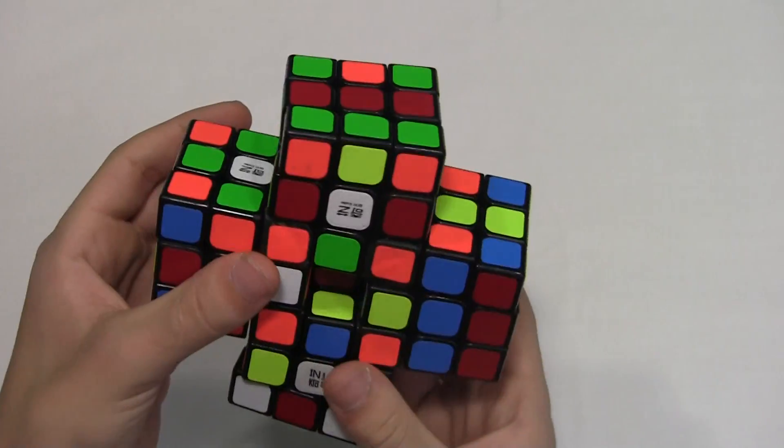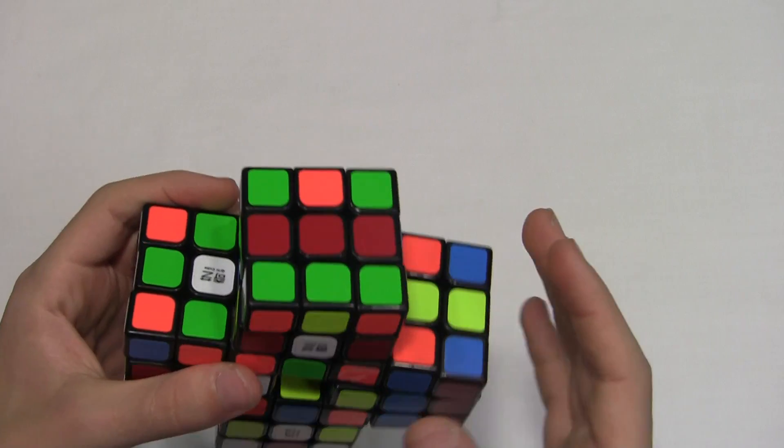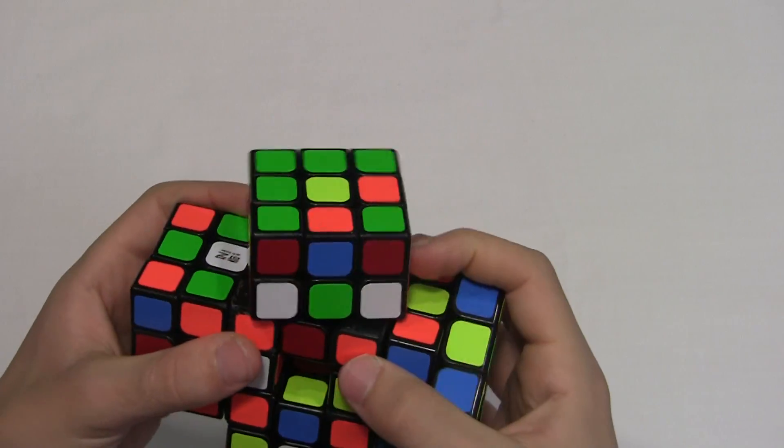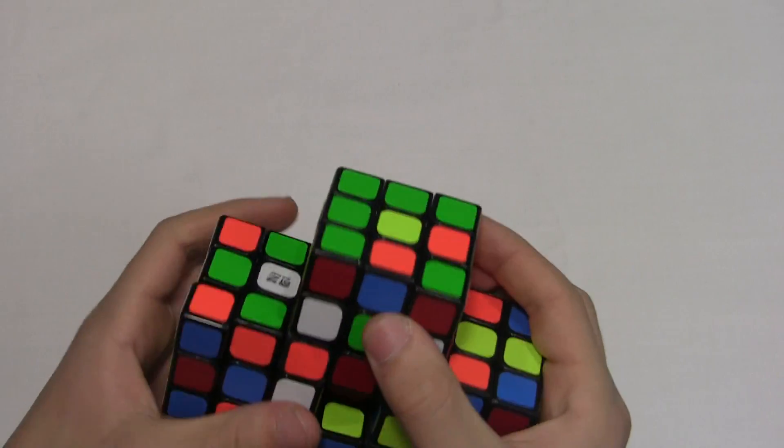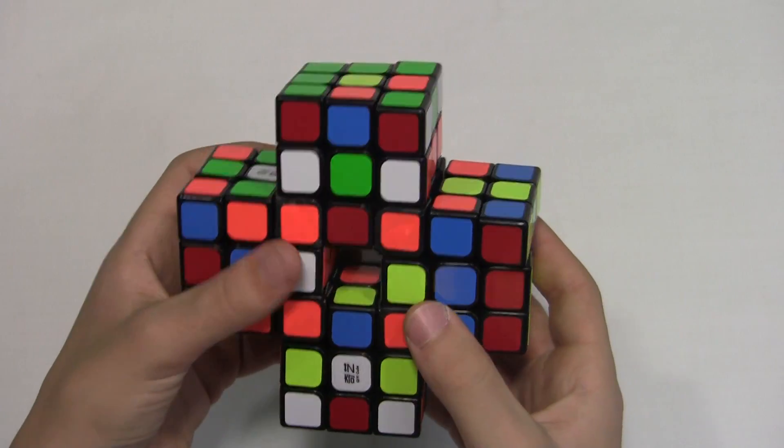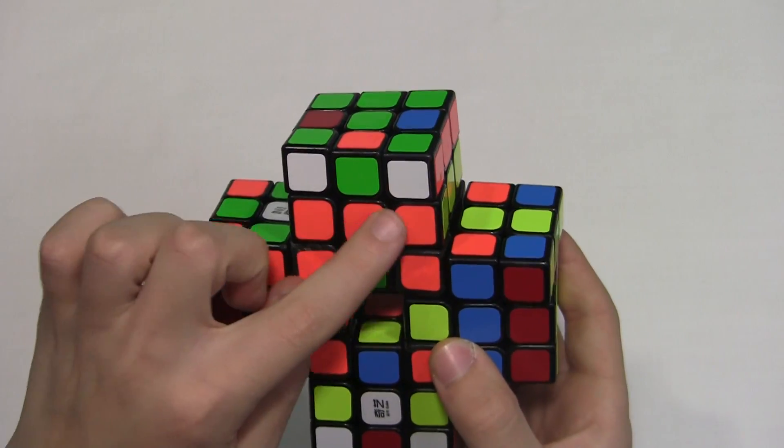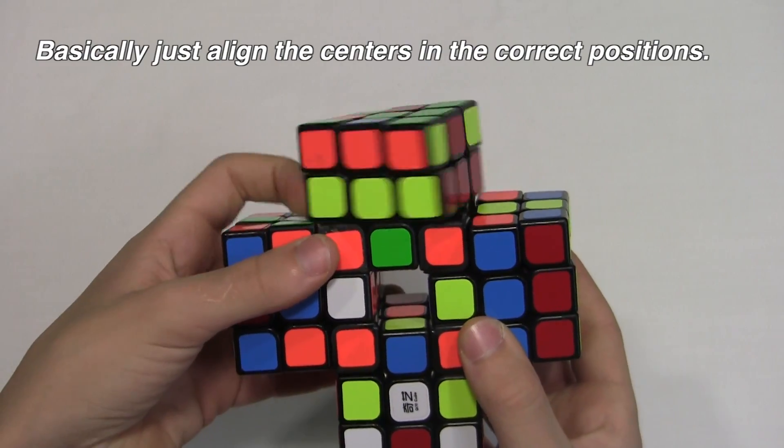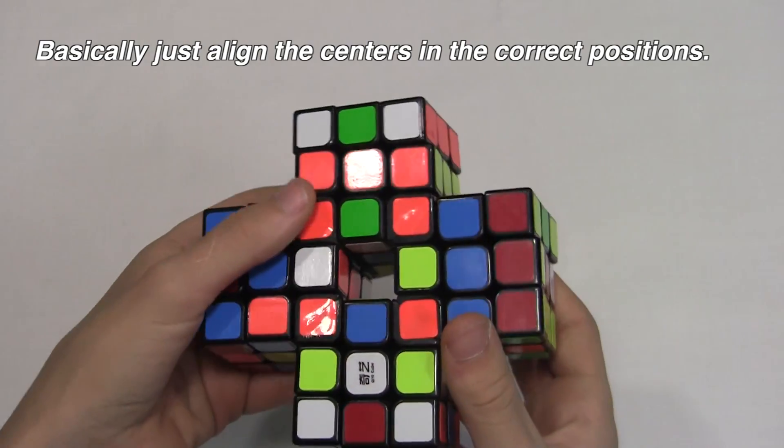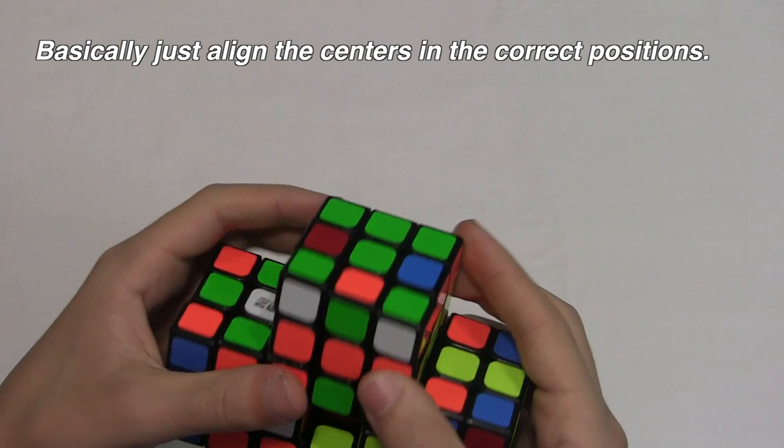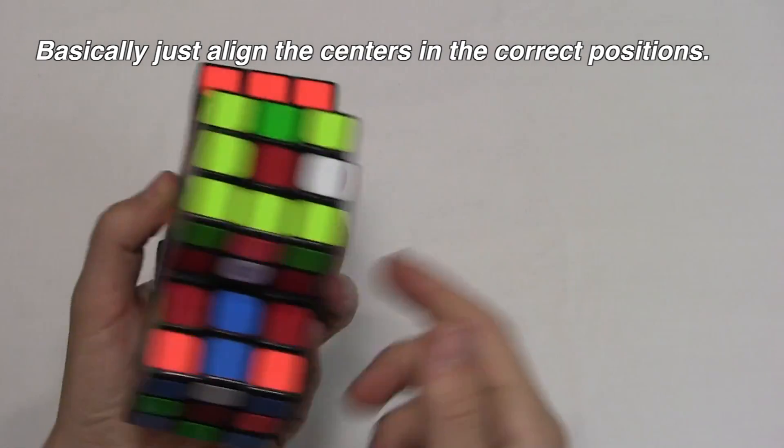And so let me just do a solve. It's a really easy solve, although it's different, a little bit different from the 3x3 at the beginning. Because you have to make a middle line first, a second layer line. And then after this second layer line, you put the bottom two pieces in.